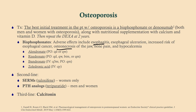With bisphosphonates, patients can also get osteonecrosis, another commonly tested adverse effect. The main differences among bisphosphonates are route of administration and frequency. Alendronate (Fosamax) can be taken daily or weekly. Risedronate (Actonel) can be taken monthly or bi-monthly. Ibandronate (Boniva) can be taken orally once a month or IV four times a year.